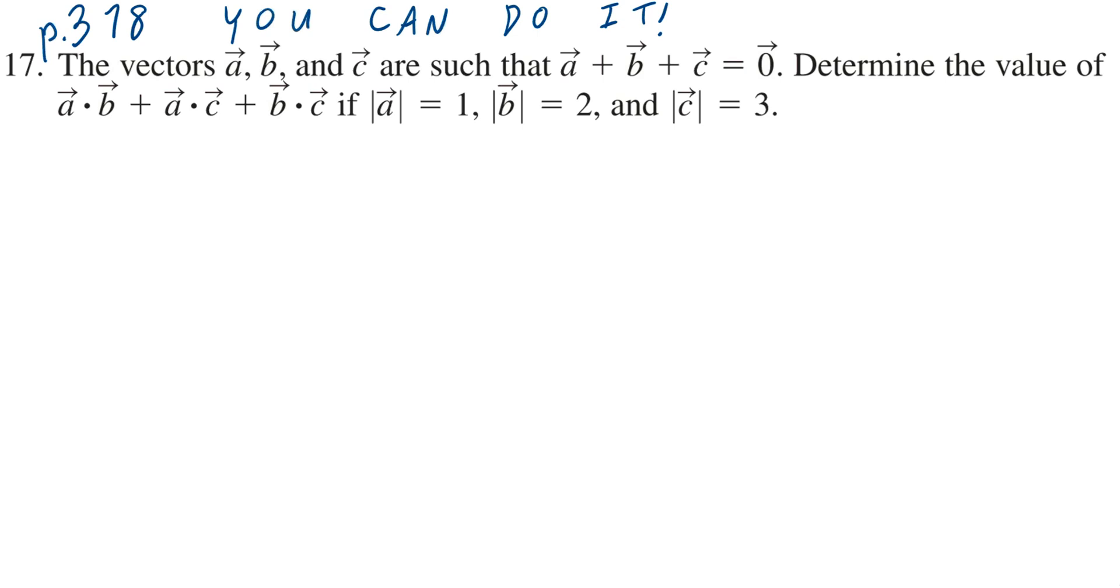Hi everyone, let's take a look at number 17 on page 378. The vectors a, b, and c are such that vector a plus vector b plus vector c equals the zero vector. Determine the value of vector a dotted into vector b plus vector a dotted to vector c plus vector b dotted to vector c if the magnitude of vector a is 1, the magnitude of b is 2, and the magnitude of vector c is 3.